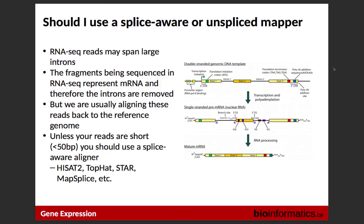Should you use a splice-aware aligner or an unsplice-aware aligner? The answer is straightforward: if you're mapping to a whole genome reference, you must use a splice-aware aligner. If you're mapping to a transcriptome, you don't need one. For this module, we're doing splice-aware alignment focusing on HiSat2.